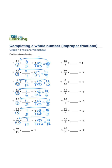1 over 1, denominator is 11. 1 times 11, 1 times 11 equals 11 over 11. 11 minus 10 is 1 over 11. 4 over 1,